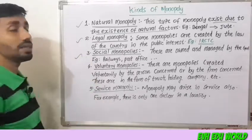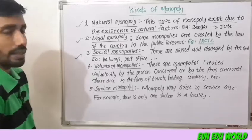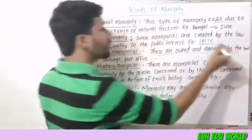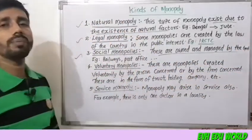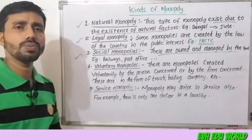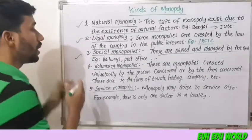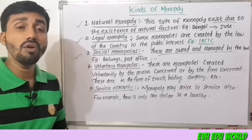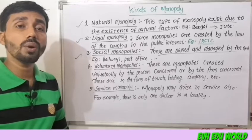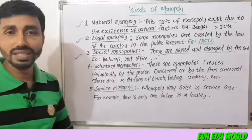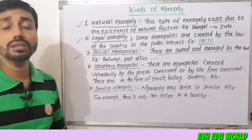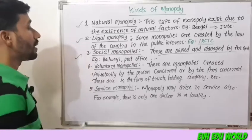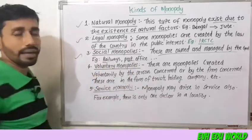The third kind is social monopoly. These are owned and managed by the government. The main aim of this type of monopoly is not to make a profit but to provide service to society. Examples include railways and postal services.